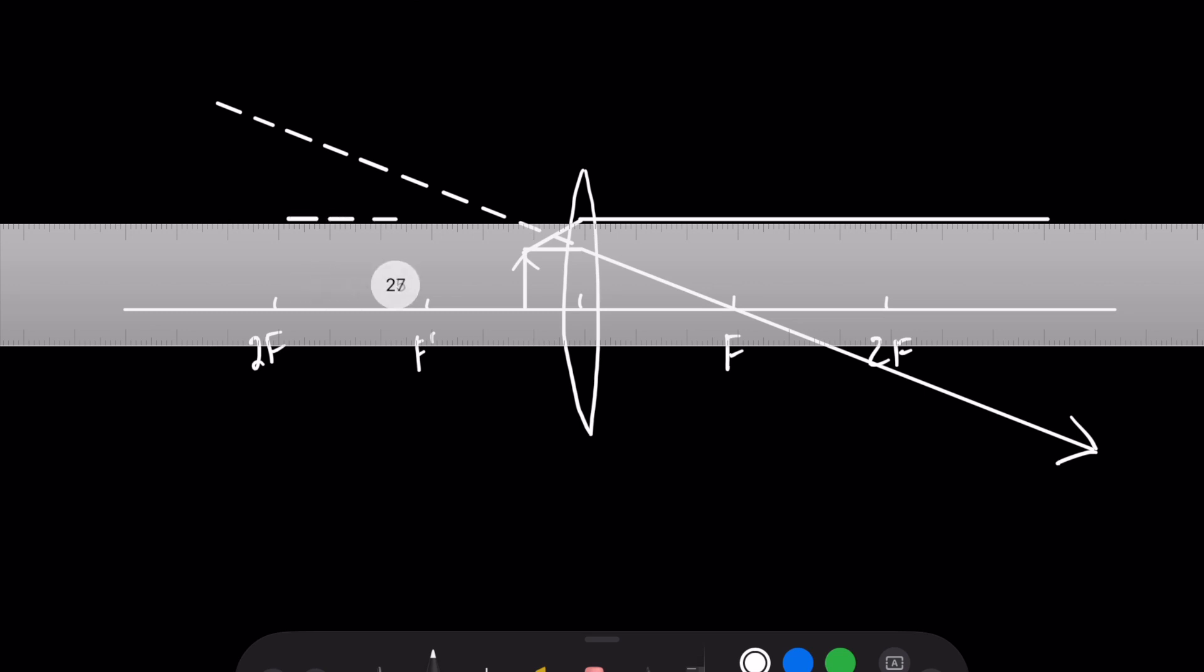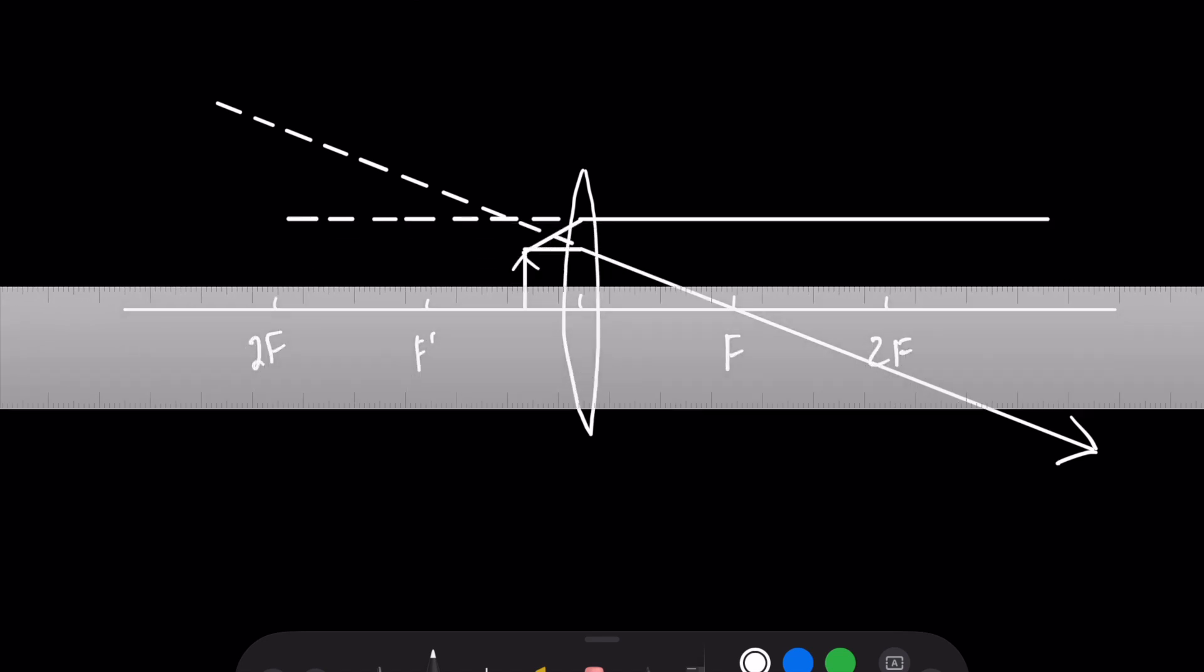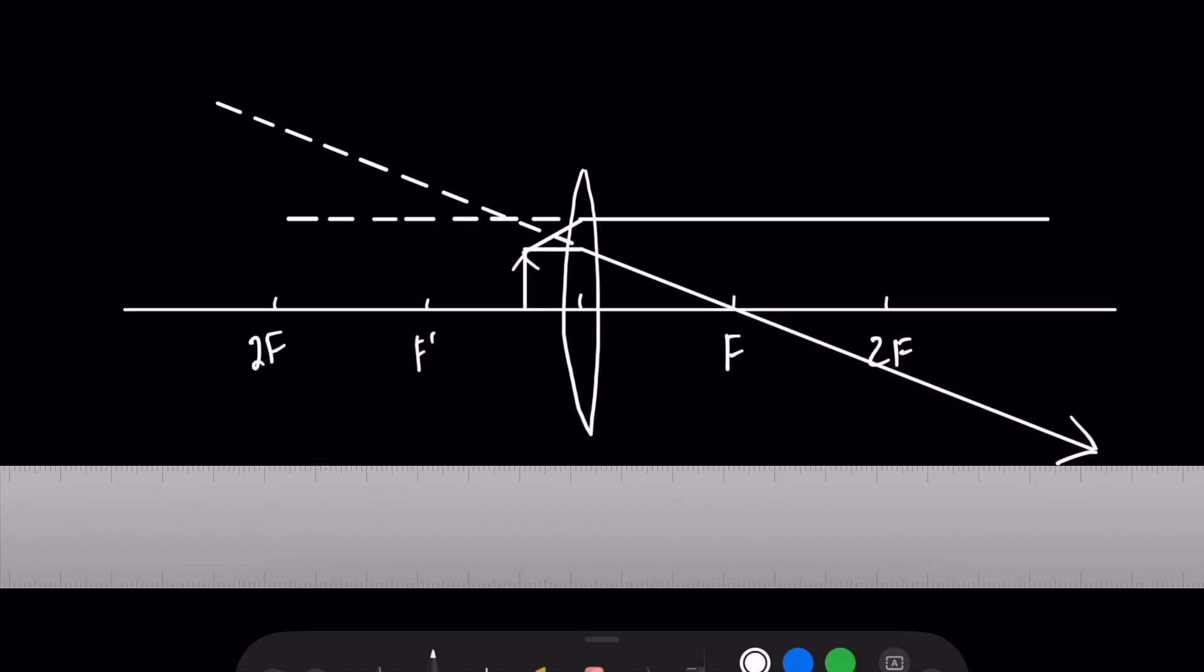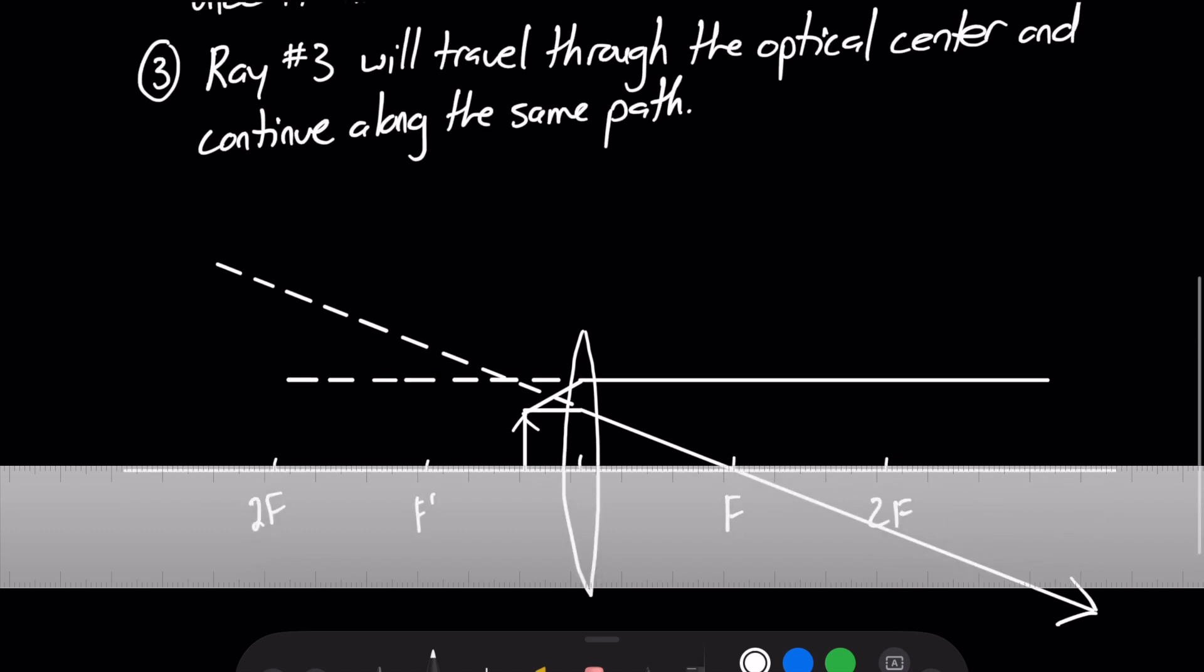So it should be looking something like this. And remember what I said earlier, for examples where the object is in front of our secondary focal length, we have to backtrack. Okay, so we will backtrack with those dotted lines once again. So it should look something like that. So we have two rules complete now and you might be able to figure out where our image is going to be based on our dotted lines.